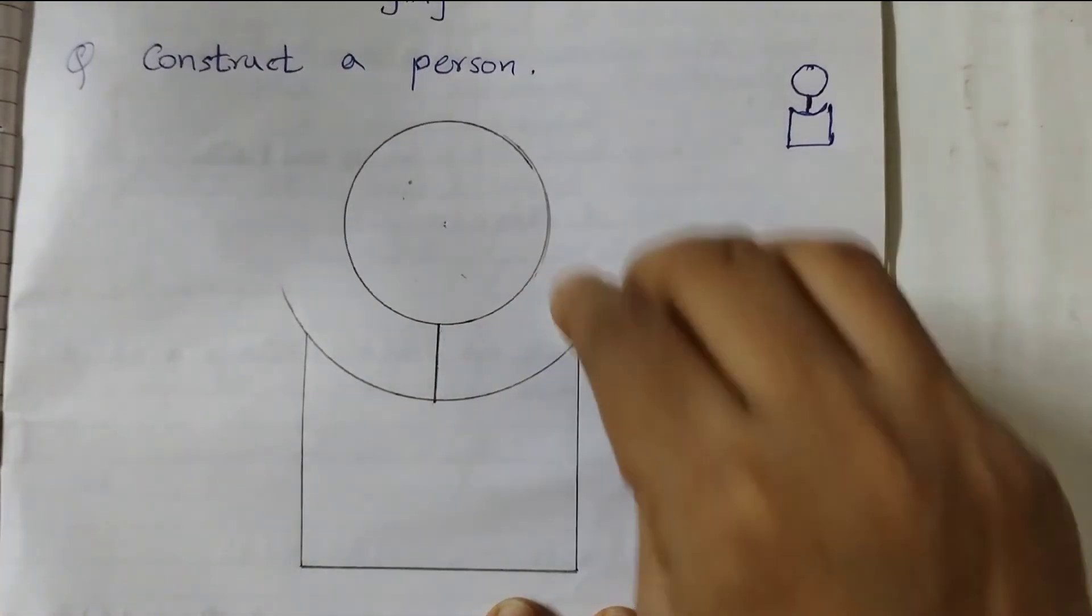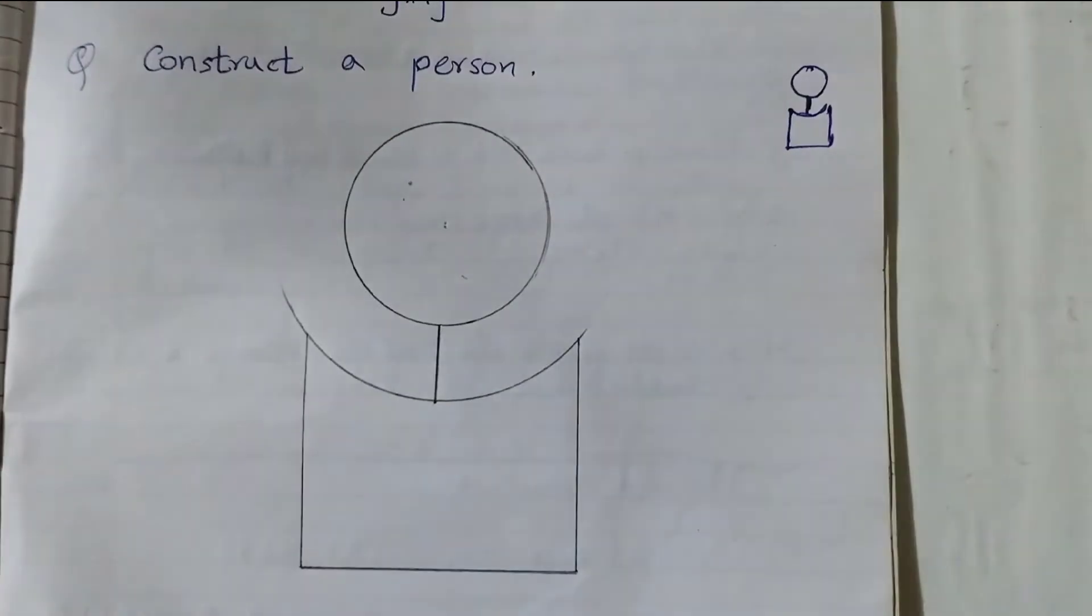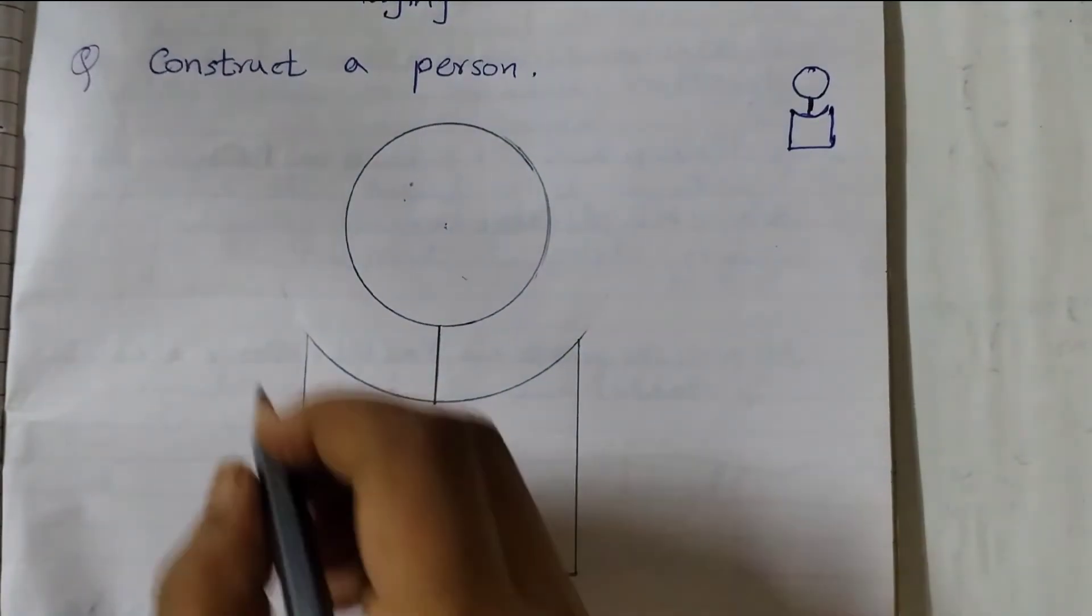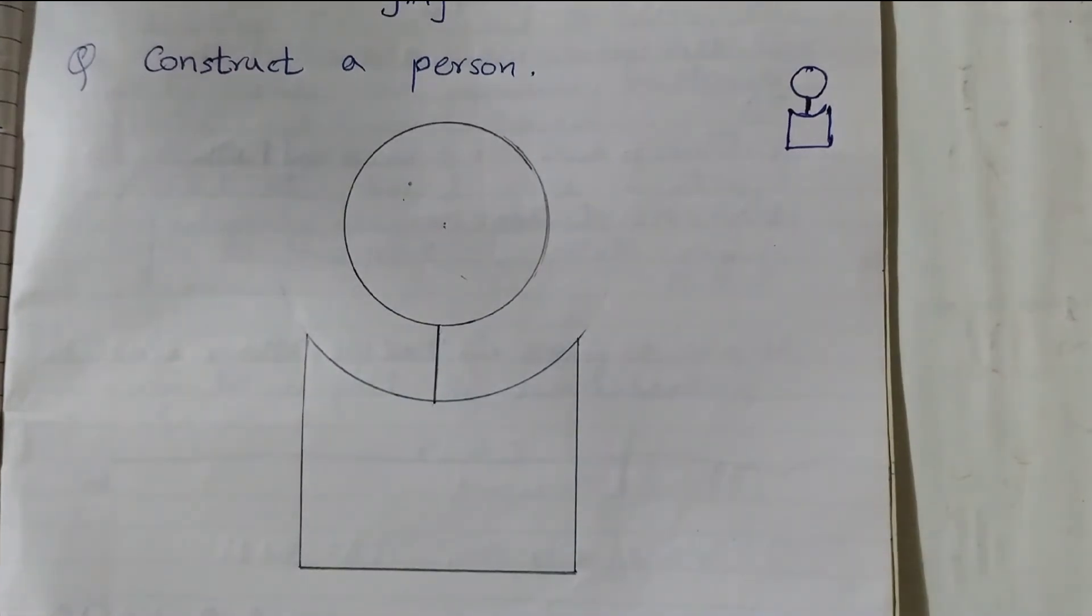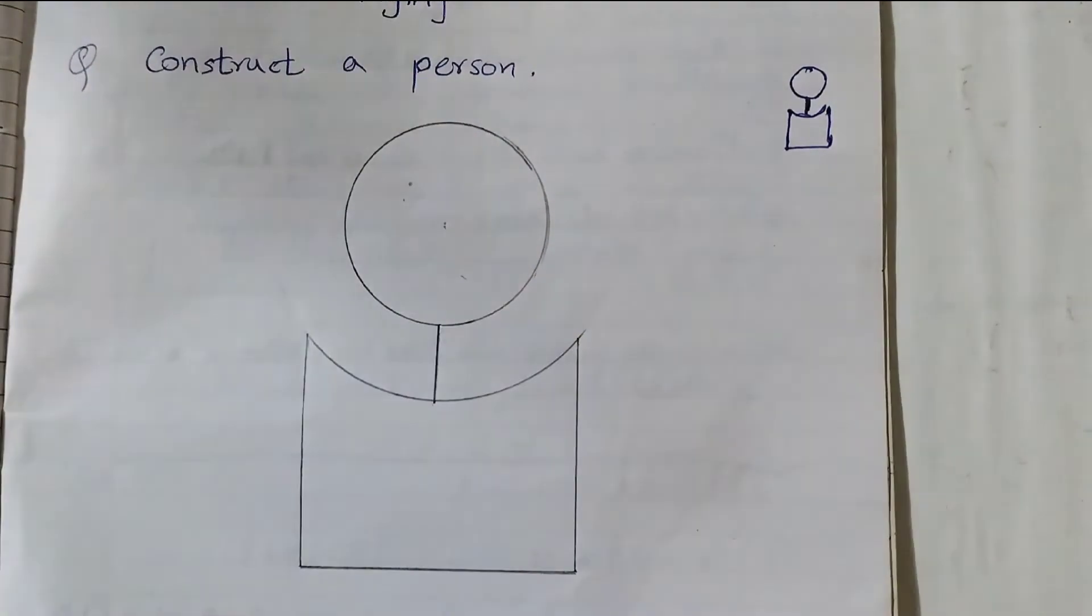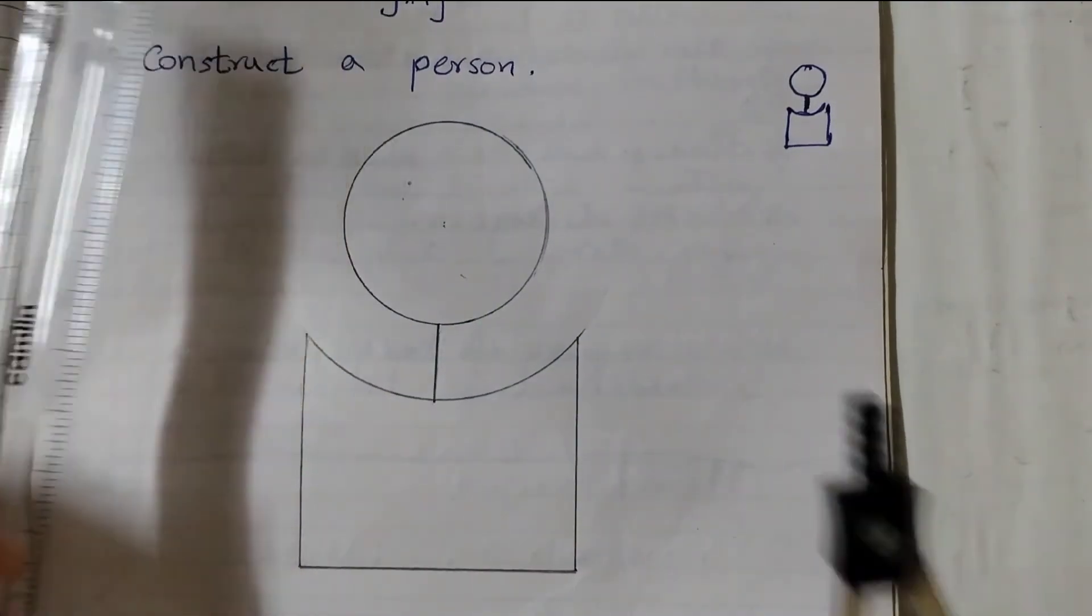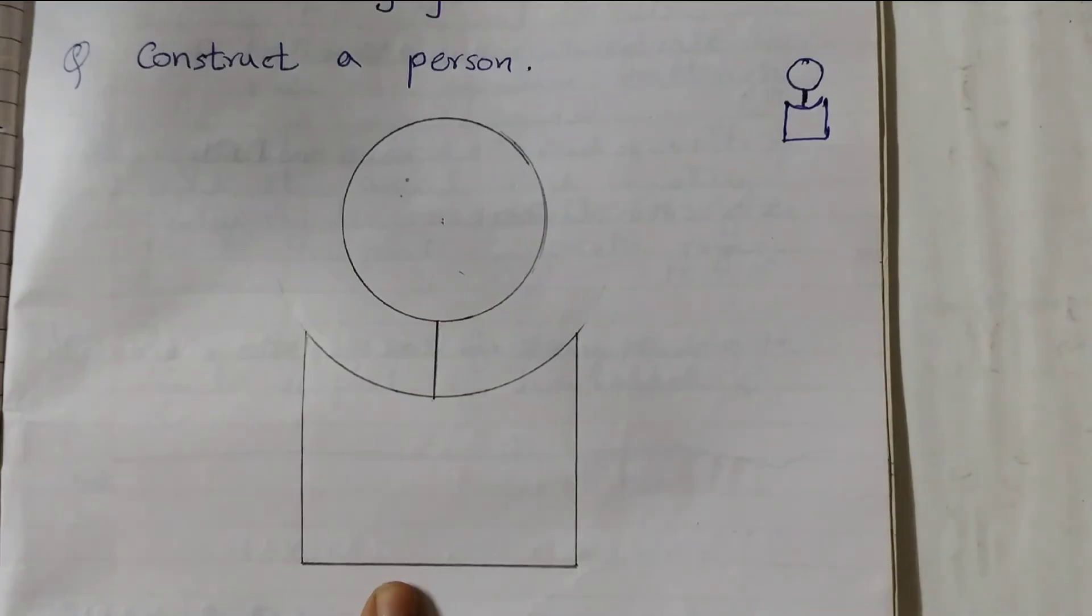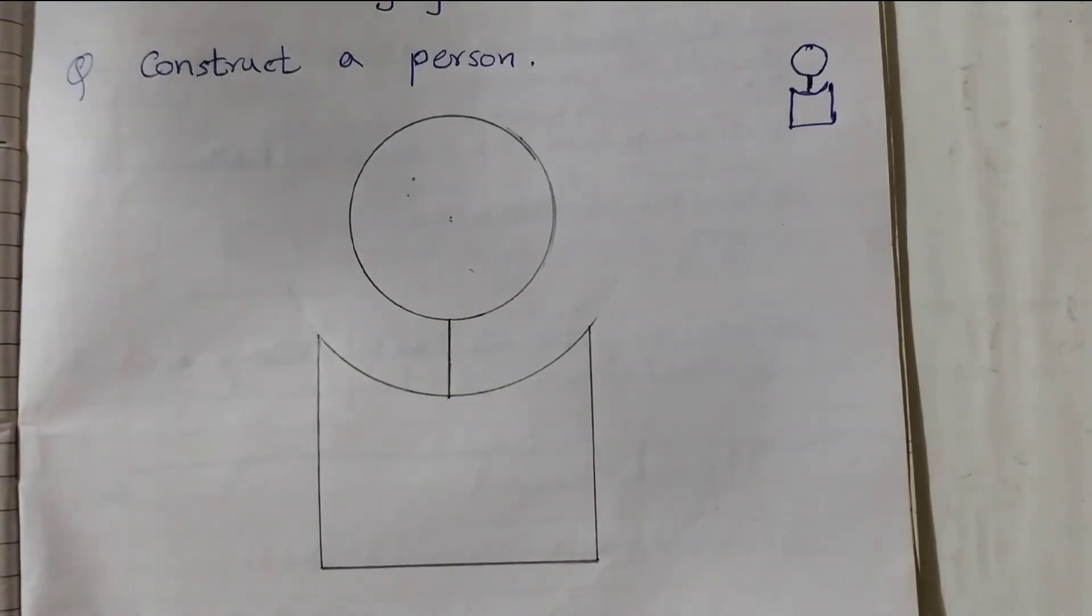The extra part you can just erase. Here you can see we have constructed a person using a ruler and a compass, and it is so easy. Just give it a try and you will enjoy it. That's all for now. See you in the next video.